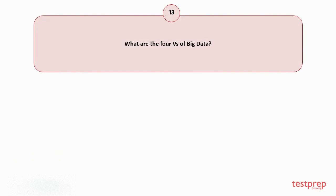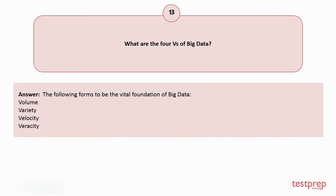Question number 13: What are the four V's of big data? Your answer is: The following forms to be the vital foundation of big data. 1. Volume. 2. Variety. 3. Velocity. 4. Veracity.